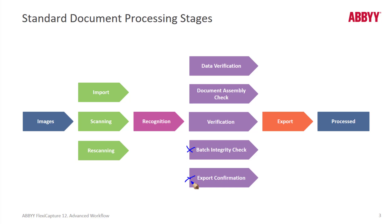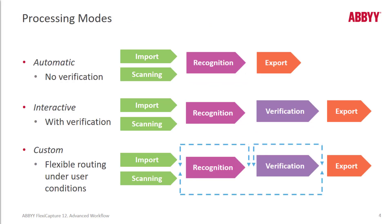It's not atypical for people to forgo these stages, depending on your circumstances. If you're dealing with just one-page documents, you would likely turn off the document assembly check. There are different processing modes. The automatic mode is also known as an unattended mode, where after ingestion, documents are recognized and exported. An interactive mode allows verification using our standard capture workflow. A customized processing mode might have custom queues and rules that designate from which verification queue data flows and to which verification queues.